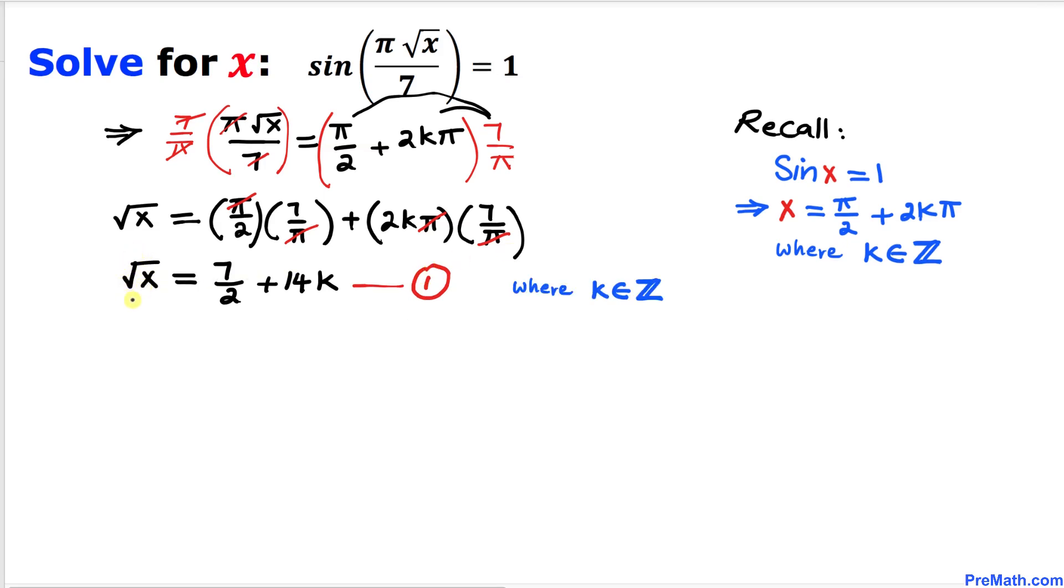Now let's notice that the square root of x cannot be negative—it's going to be either 0 or greater than 0. That means the right hand side, 7 divided by 2 plus 14k, is also greater than or equal to 0.